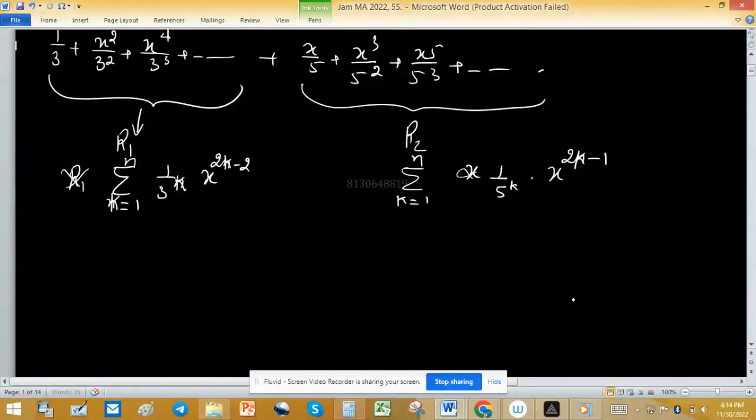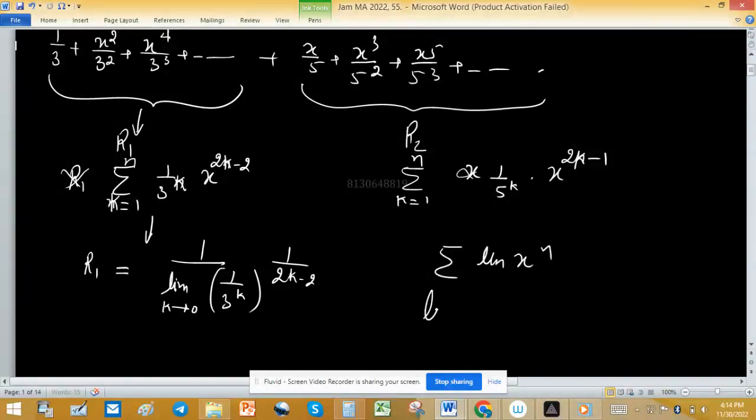Now, one by one we will try to find the radius of convergence of first one. So r1 equals to 1 upon limit k tends to infinity, 1 upon 3 raised to the power k raised to the power 1 upon 2k minus 2. If summation un x raised to the power n, then radius of convergence n tends to infinity, 1 upon un raised to the power 1 upon n.